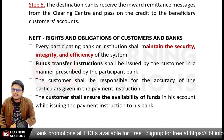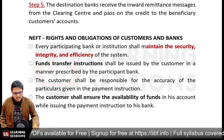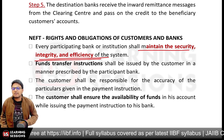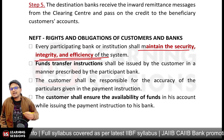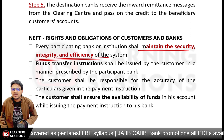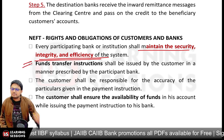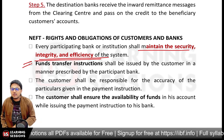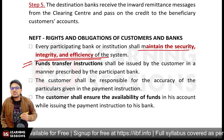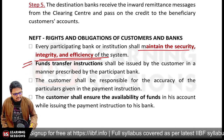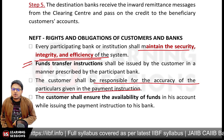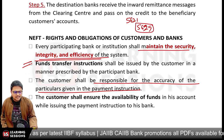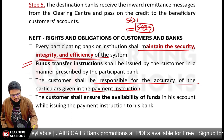Now let's understand the rights and obligations of customers and banks. Every participating bank must maintain security, integrity, and efficiency of the system. Fund transfer instructions shall be issued by customers in the manner specified by the bank — the originating bank provides the format, all details are filled in, and the customer is responsible for the accuracy of the particulars. It is not the bank's responsibility if the account number is wrong.